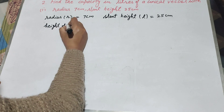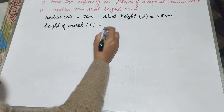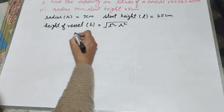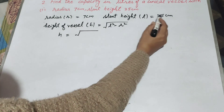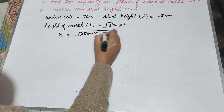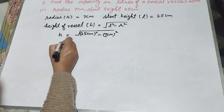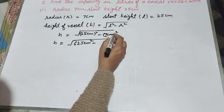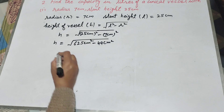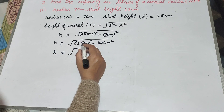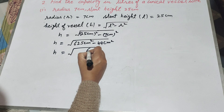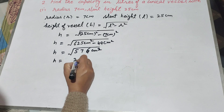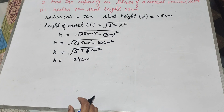Height of the vessel h is found using the formula h equals square root of l squared minus r squared. l is 25 centimeter and r is 7 centimeter. So h equals square root of 625 minus 49, which is square root of 576, and h is equal to 24 centimeter. That is the height of the vessel.